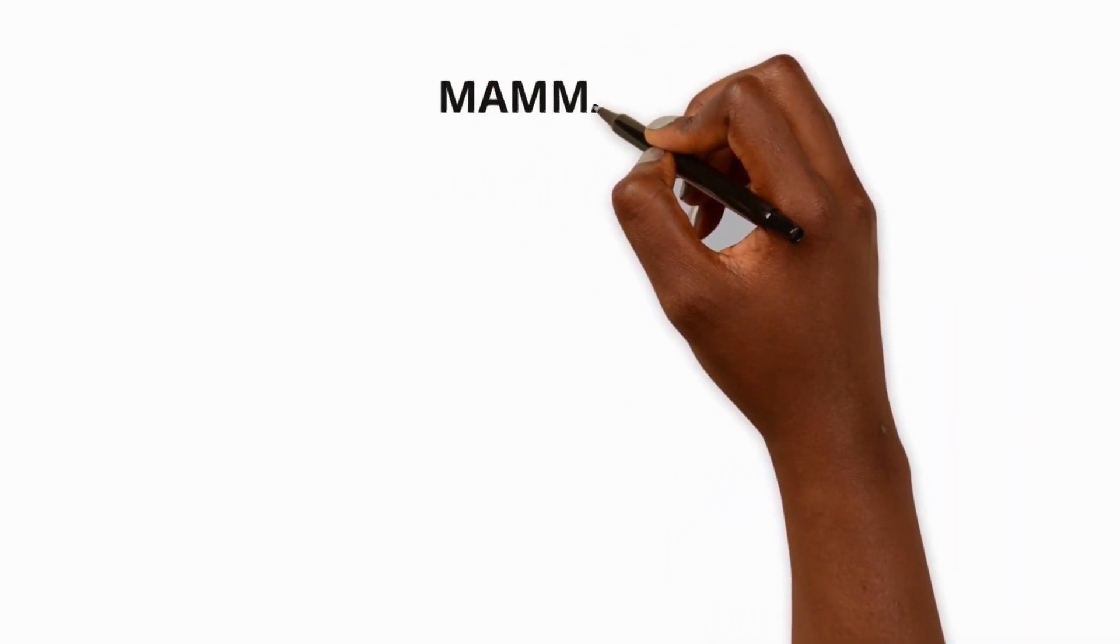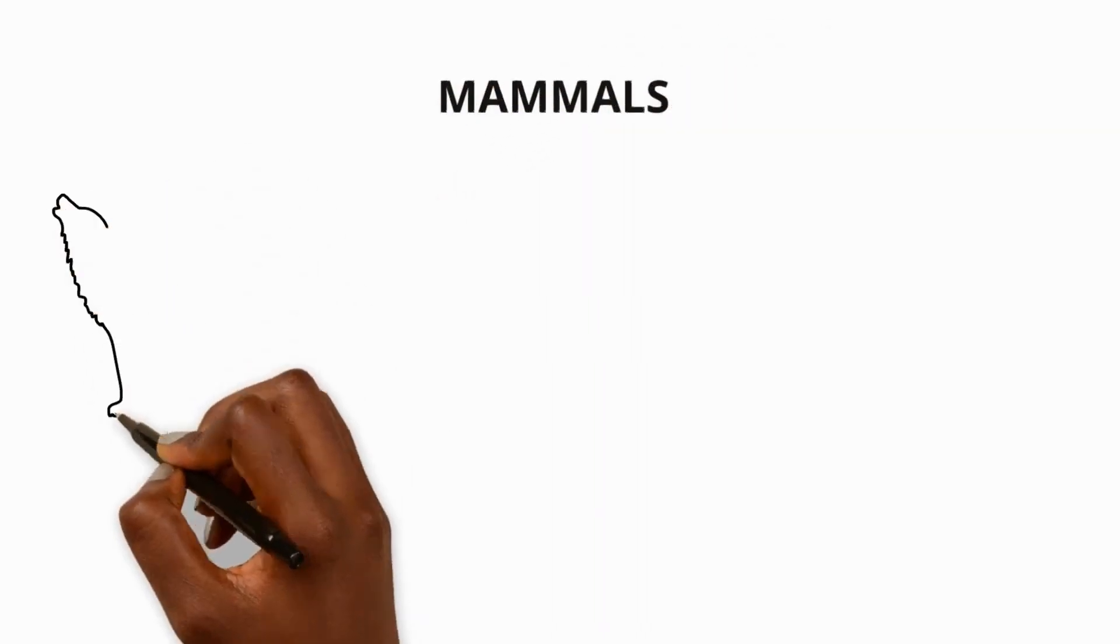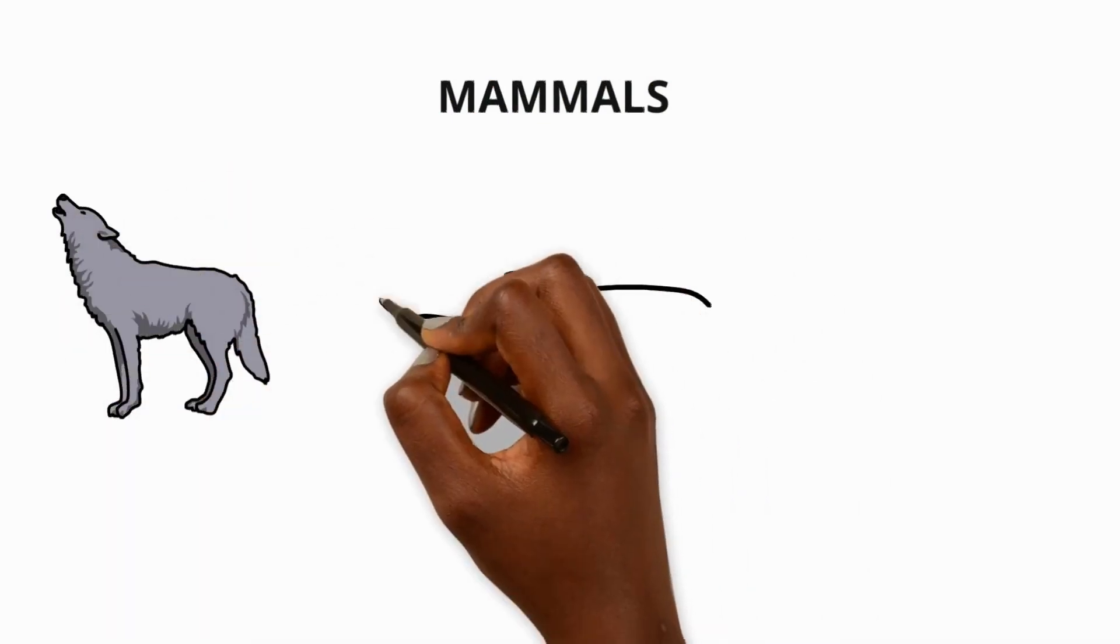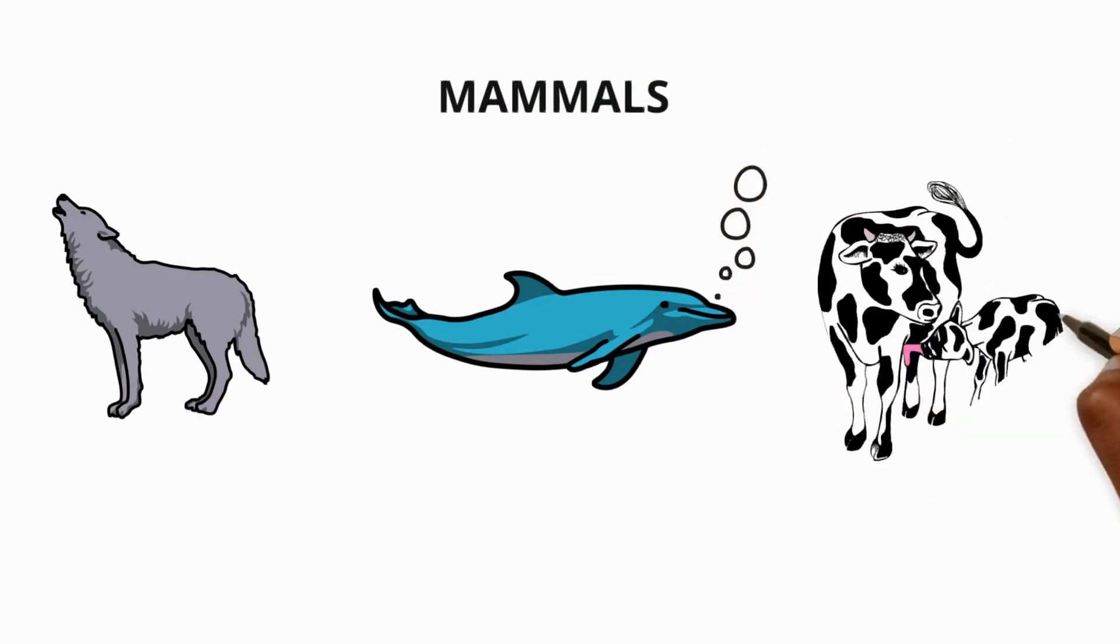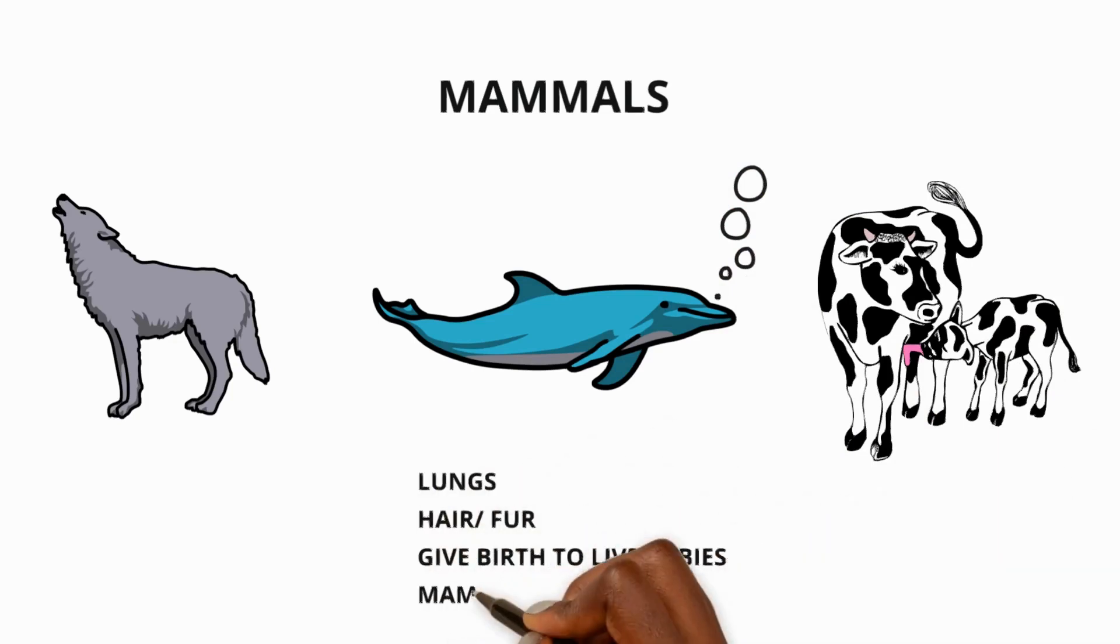Finally let's talk about mammals. All mammals breathe air through their lungs even if they live in water. Did you know that whales and dolphins can hold their breath for a long time because they can store oxygen in their bodies? And most mammals are covered in hair or fur and give birth to live babies.